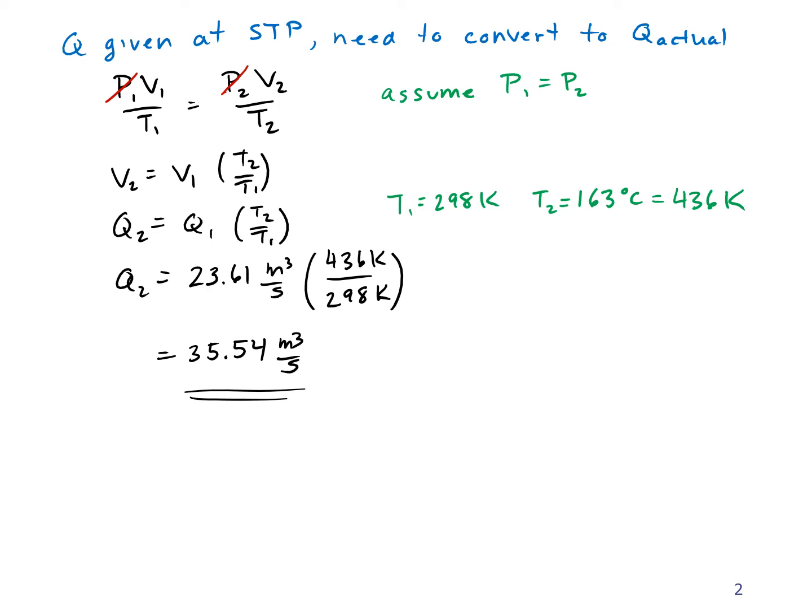That's the flow rate I will be using in the Deutsch-Anderson equation. So next up, we apply the Deutsch-Anderson equation. This tells us the collection efficiency of an ESP. It assumes mixed flow in the ESP. Eta equals the exponential of some things. I can say that A equals minus Q over W times the natural log of 1 minus eta.